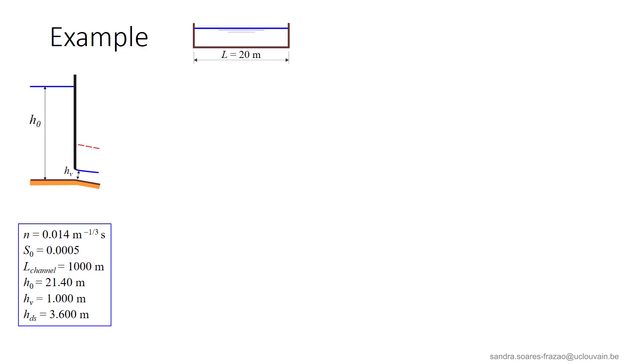At the upstream end of the channel, we have a reservoir with a water depth h0 equal to 21.4 meters, and an underflow gate inducing a water depth hv of 1 meter. At the downstream end of the channel, we have a reservoir with a water depth hdS of 3.6 meters.